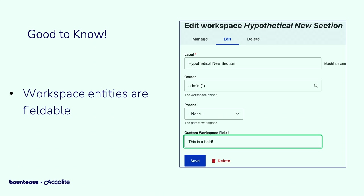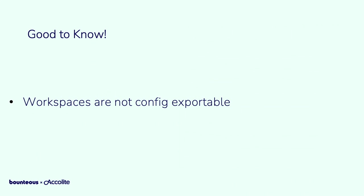Workspaces are entities within Drupal, but they're not config entities — they're just their own little entity, and they are fieldable. You can decorate them with additional fields to help you organize and manage workspaces as you see fit. The fields are exportable as config, so do that on your local, export it, push it through the process. But the workspace entities themselves are not exportable — they live where they are. Workspaces are not config-exportable.